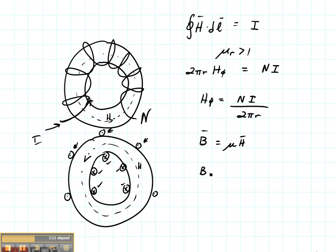Remember that B is equal to mu H. So if I wanted to find my magnetic flux density, it would be mu naught times mu r times ni over 2 pi r. And it would be in the phi direction as shown here.